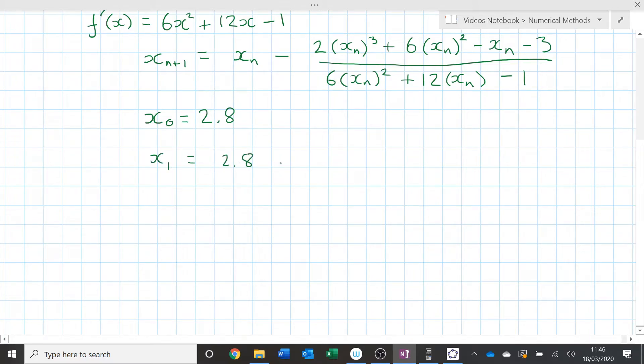But x1 is going to be 2.8 minus 2 in brackets, 2.8 cubed plus 6 in brackets, 2.8 squared minus 2.8 minus 3. That is a bit tedious. Over 6, 2.8 squared plus 12, 2.8 minus 1. And if I put that all into my calculator, I get 1.7309.